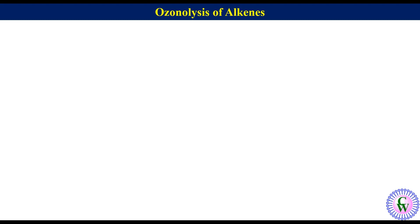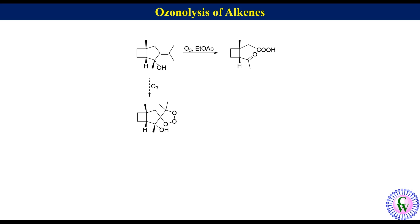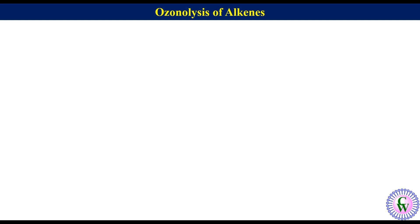Now we will discuss ozonolysis of allyl alcohol. Ozonolysis of allyl alcohol gives an unusual product. For example, this allylic alcohol undergoes ozonolysis in ethyl acetate to give a keto ester as an unusual product. The mechanism involves reaction of the double bond with ozone to produce primary ozonide, which breaks up and rejoins to produce secondary ozonide. This secondary ozonide decomposes, eliminating an acetone molecule, to produce the unusual product.